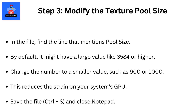Step 3: Modify the texture pool size. In the file, find the line that mentions pool size. By default, it might have a large value like 3584 or higher. Change the number to a smaller value, such as 900 or 1000. This reduces the strain on your system's GPU. Save the file with Ctrl+S and close Notepad.